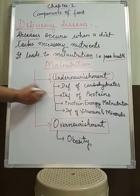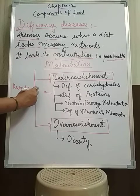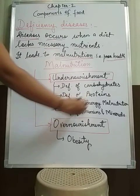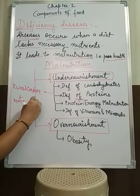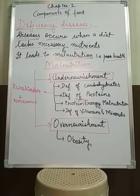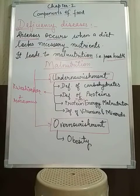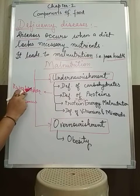Proteins are body-building food items. Deficiency of proteins causes kwashiorkor, a deficiency disease that affects the physical and mental growth of a child. Protein-energy malnutrition (PEM) involves both kwashiorkor and marasmus. Marasmus is caused due to deficiency of proteins, carbohydrates, and fats, and results in the complete stoppage of growth in a child.